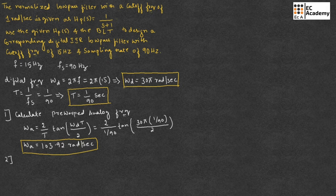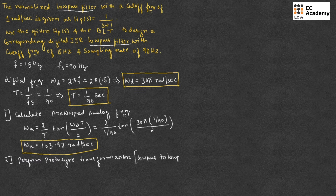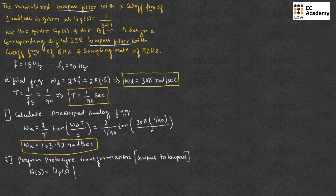The second step is to perform the prototype transformation. Here we need to convert the low-pass filter into a low-pass filter as per the given problem, so the transformation should be from low-pass to low-pass. For low-pass to low-pass transformation, H(S) is given as H_P(S) where S is replaced with S divided by omega_A.